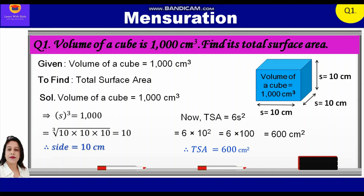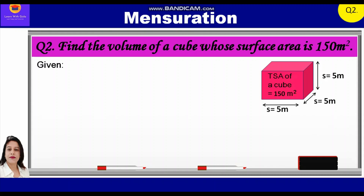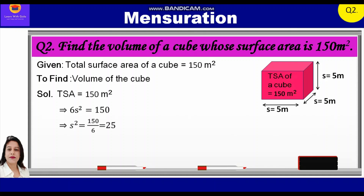Now let's take up question number 2. Find the volume of a cube whose surface area is 150 m². Given: total surface area of the cube is equal to 150 m², which implies 6S² = 150. Therefore, S² = 150/6 = 25. Now S = √25 = 5 meters.